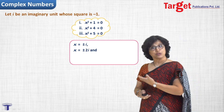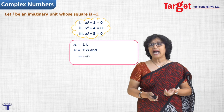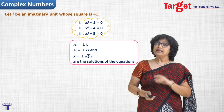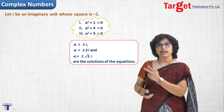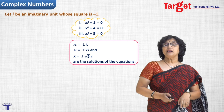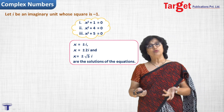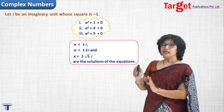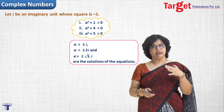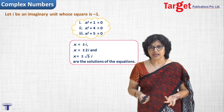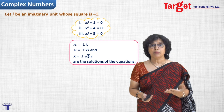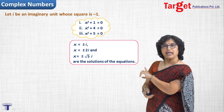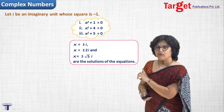Similarly, x equal to plus or minus 2i and x equal to plus or minus root 5 i will satisfy the remaining two equations. And what we have done is found some solutions to these equations which are surely not real numbers — they have something we have not seen before.